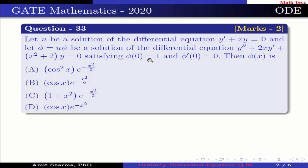Satisfying φ(0) = 1 and φ'(0) = 0. Then φ(x) is: option (a) cos²x · e^(−x²/2), option (b) cos x · e^(−x²/2), option (c) (1 + x²) · e^(−x²/2), option (d) cos x · e^(−x²).